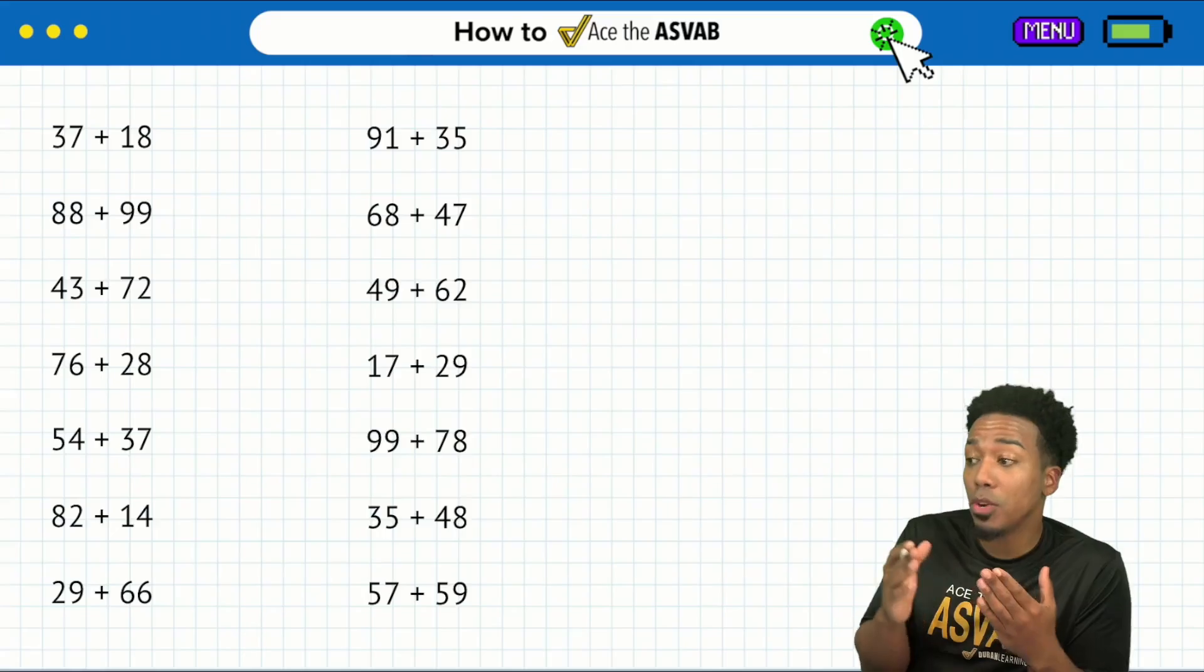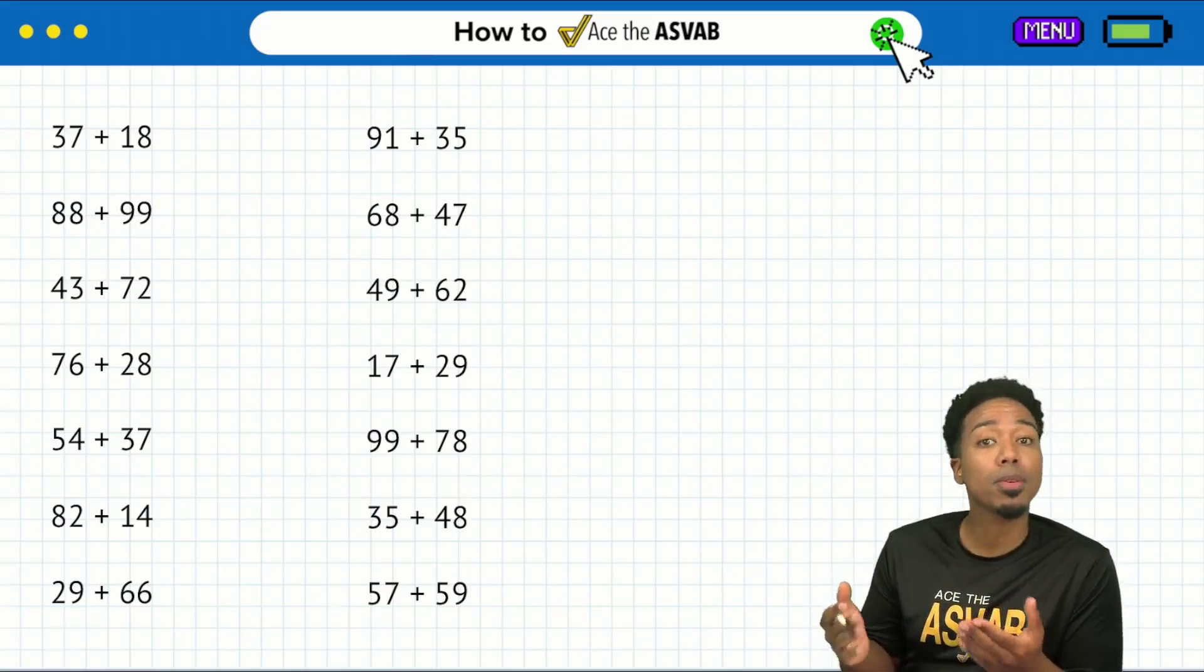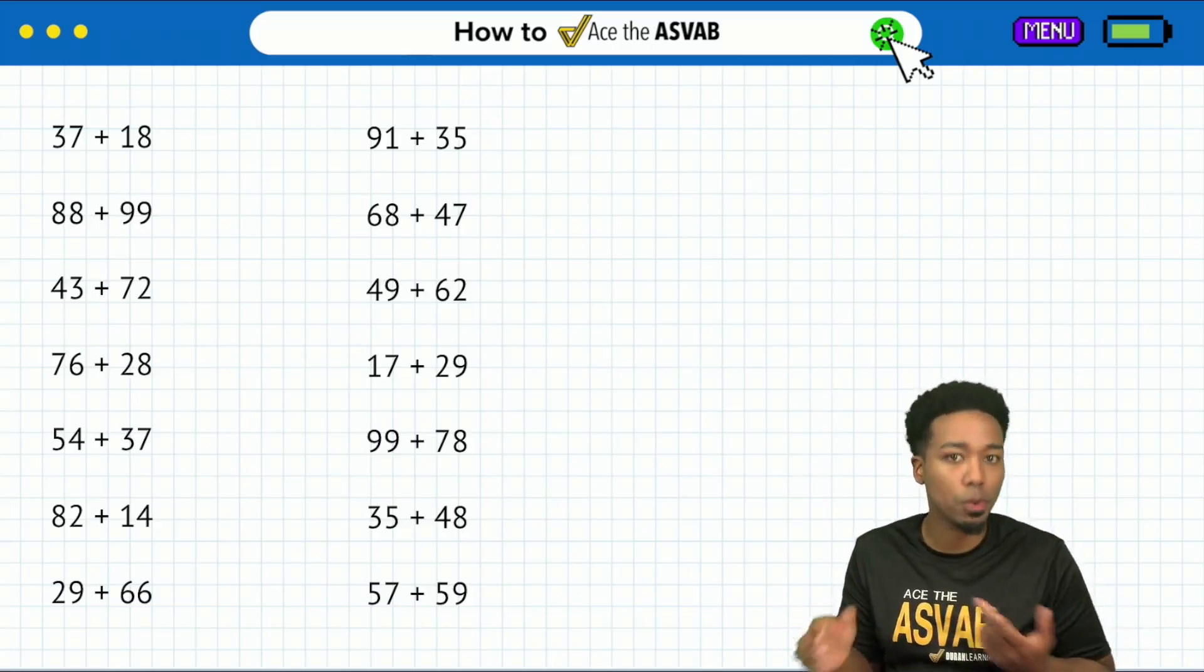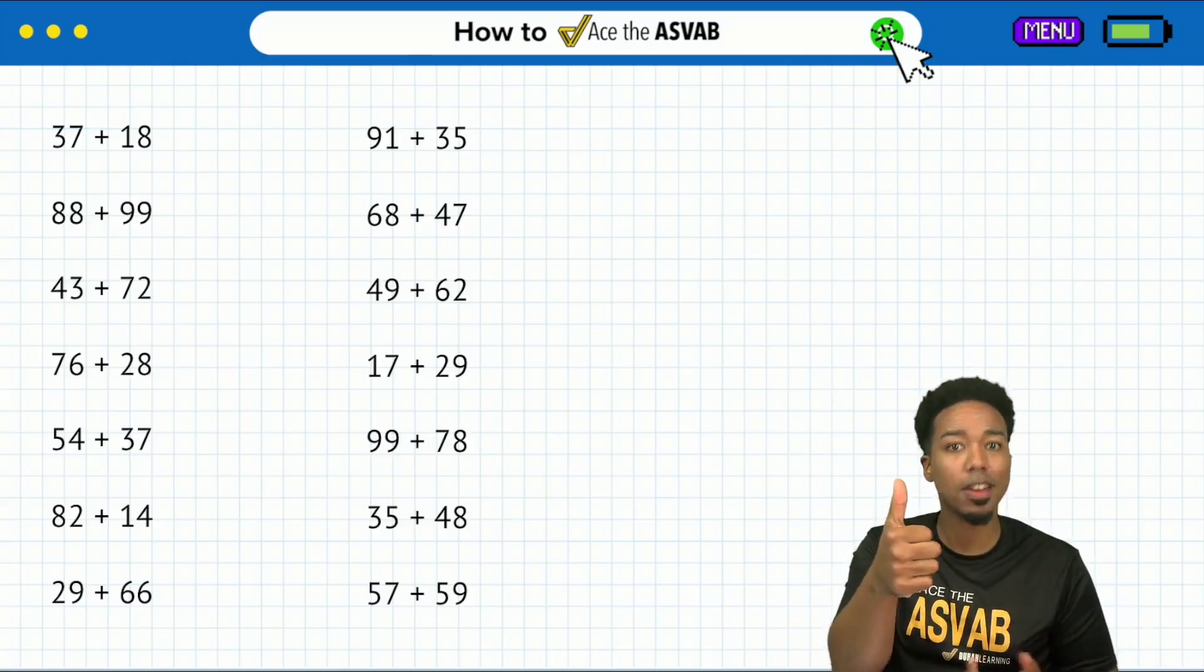First things first, when you are taking the ASVAB, remember that when you're on the word problems, there's two phases to a word problem. There's the setup, and then there's the calculation.